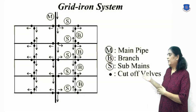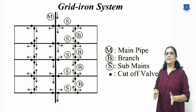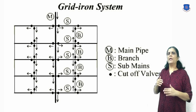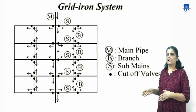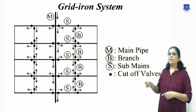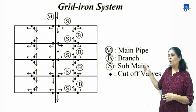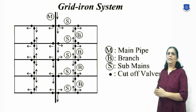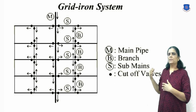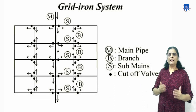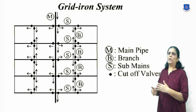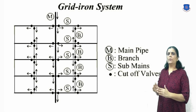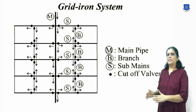Next, the grid system. It is suitable for cities with a rectangular layout where the water mains and branches form rectangles. Water is kept in continuous circulation due to the absence of dead ends. In cases of breakdown in some sections, water is still available from another direction. However, exact calculation of pipe sizes is not possible due to the provision of pipes on all branches.